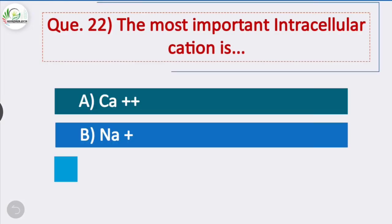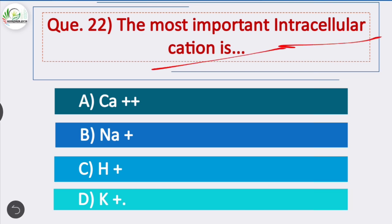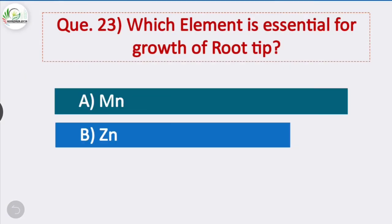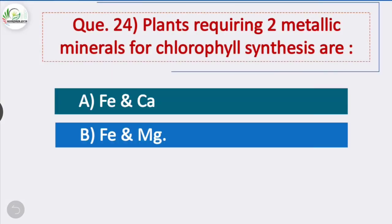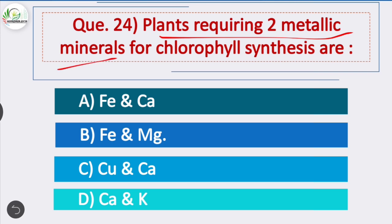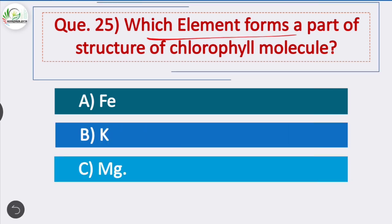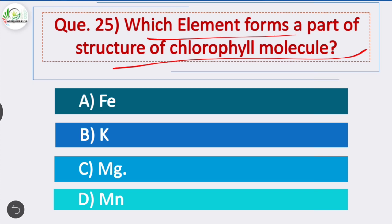Question 22: The most important intracellular cation is potassium — potassium cation is the most important intracellular cation. Question 23: Which element is essential for growth of root hairs? Option D is correct — calcium stimulates the development of root hairs. Question 24: Plants require two metallic minerals for chlorophyll synthesis — iron and magnesium are the two metallic minerals required for chlorophyll synthesis — option B is correct. Question 25: Which element forms part of the structure of the chlorophyll molecule? Magnesium is the element which forms part of the structure of the chlorophyll molecule — option C is correct.